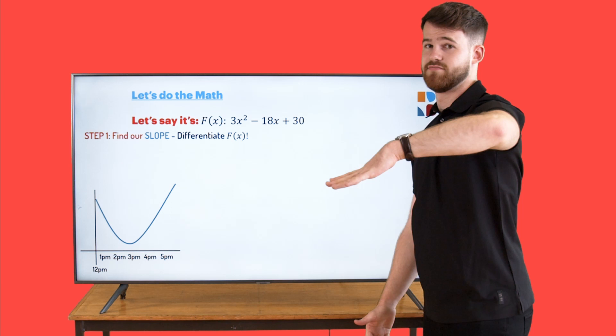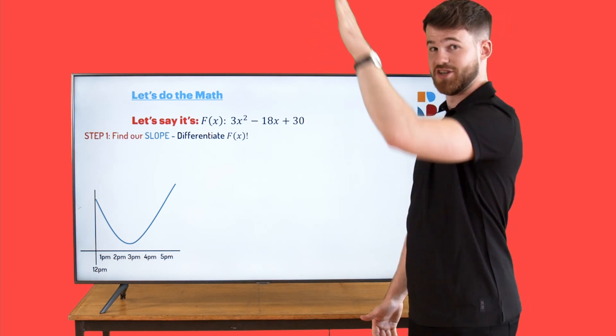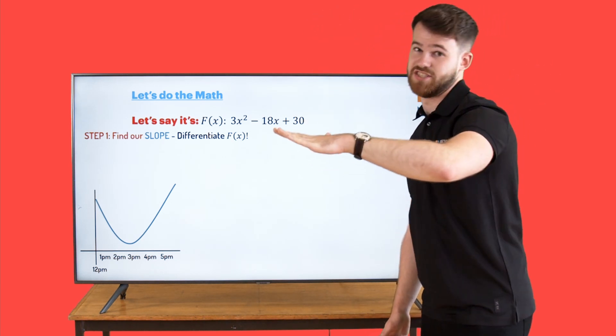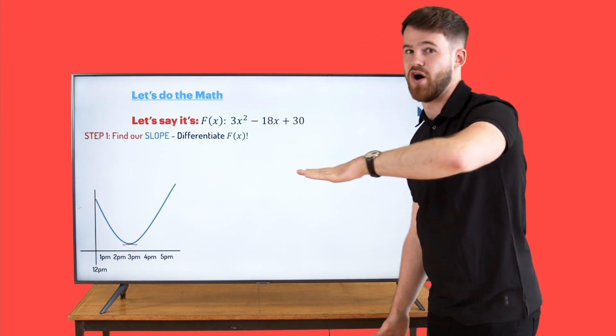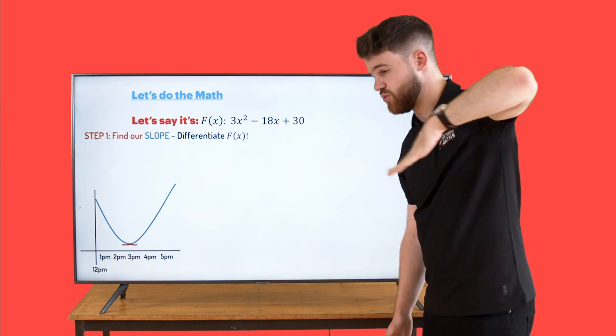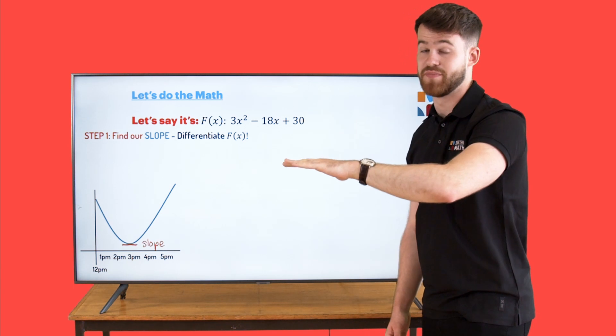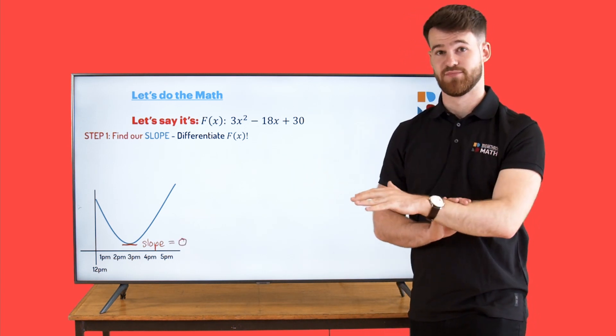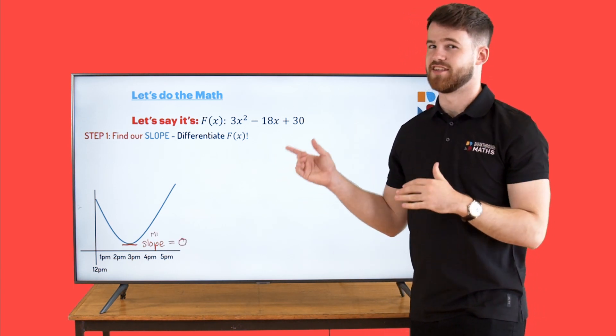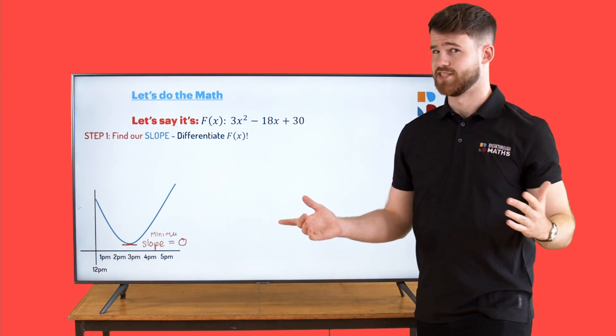It's not positive, so it's not going right up. It's equal to zero, so it's right at the bottom. So we haven't started going up, we're not still coming down, we're right at the bottom. And that's going to be the minimum point. So let's differentiate this function here and see where the minimum point is.